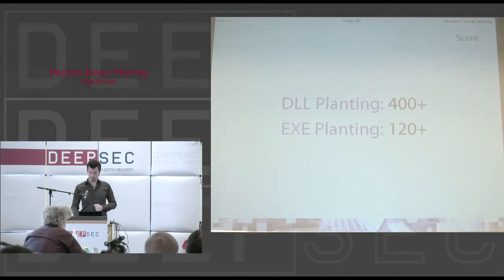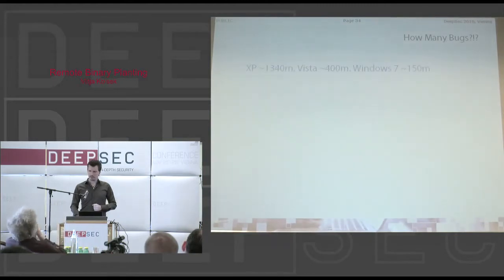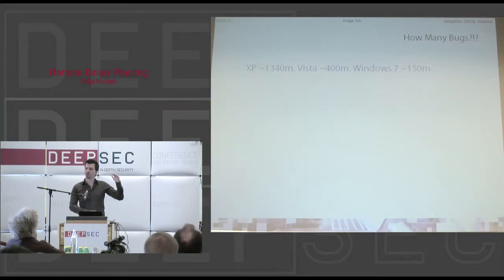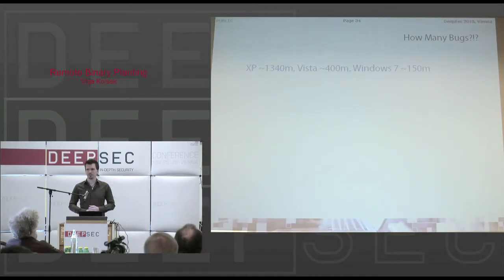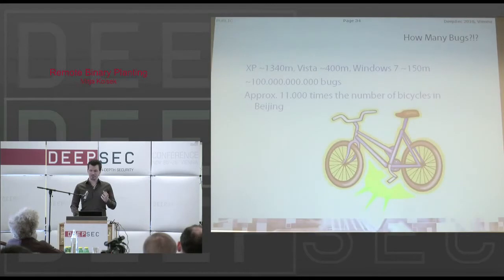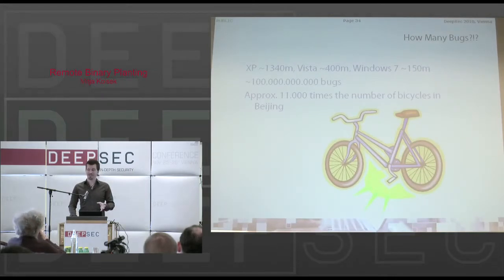So how do we get one hundred billion bugs? We took the roughly 20 most widely used vulnerable applications we found and looked up their install bases, then multiplied that by the number of bugs found in each. When you consider that Windows operating systems alone have a combined install base of around two billion, it doesn't matter whether it's 100 billion or 50 billion — it's a lot. To put it in perspective: imagine nine million bicyclists in Beijing and multiply that by 11,000. That's how many binary planting bugs just we found — and we only scratched the surface, probably inspecting 1% of representative widely-used software.